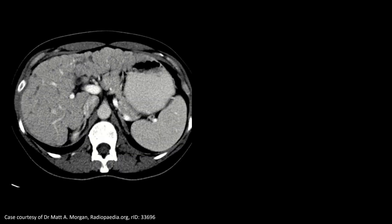There are a few mimics of the classic signs of cirrhosis worth briefly mentioning. Not all liver nodularity is cirrhosis, though it is by far the most common cause. Pseudocirrhosis is a pattern seen in the liver in some patients with metastatic disease, most commonly seen after treatment, and most classically described in breast cancer. Scarring related to metastatic lesions can make the liver look nodular, just like cirrhosis.